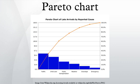A Pareto chart, named after Vilfredo Pareto, is a type of chart that contains both bars and a line graph, where individual values are represented in descending order by bars, and the cumulative total is represented by the line.